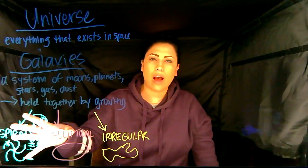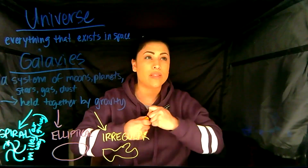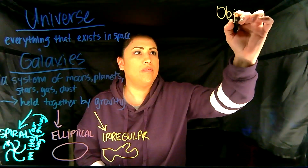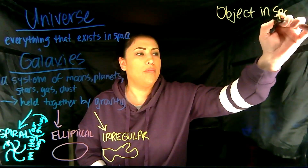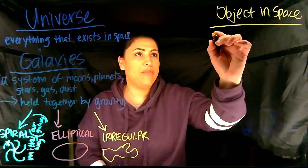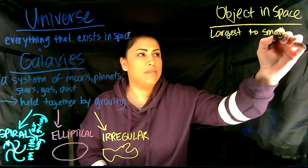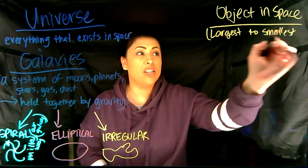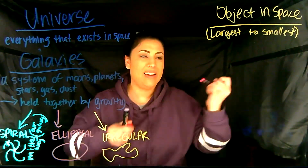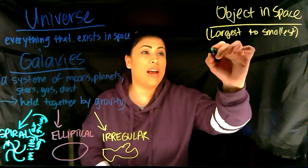If you're following along with your notes, this should take up about half the page. Now flip to the other side or use the bottom half if you have room. We're going to talk about all of the objects in space from largest to smallest. The very biggest would be the universe.